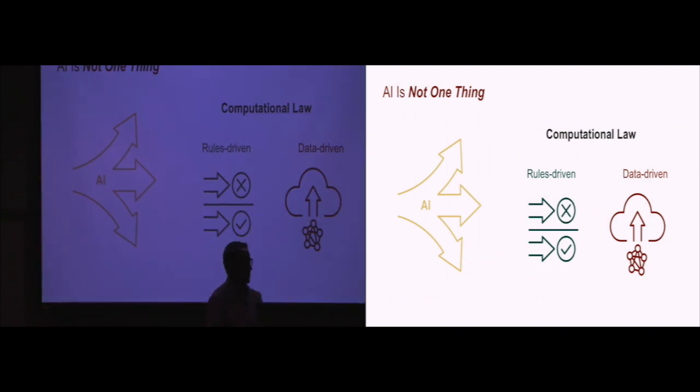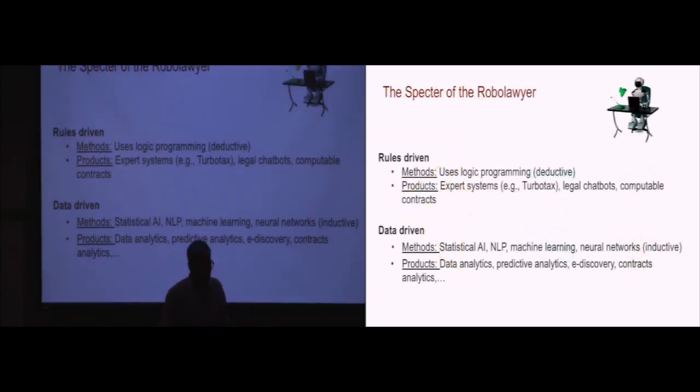AI is not just one thing. There are many different approaches. The most basic difference is rules-driven approaches and data-driven approaches. The rules-driven approaches use the methods of logic programming, deductive approaches in AI to do things like legal expert systems, legal chatbots, computable contracts. And the data-driven approaches use statistical AI methods, natural language processing, machine learning, neural networks—inductive approaches of AI to do things like data analytics, predictive analytics, e-discovery, contracts analytics.